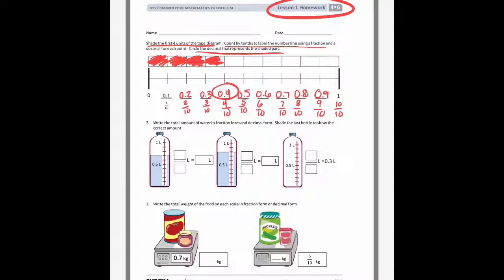Okay, number 2, it says, write the total amount of water in fraction form and decimal form. And the last one, shade the last bottle to show the correct amount. So let's look at this first bottle. If that's a liter, and I counted up from 0.5 liters, it actually is 7 tenths, which would be the same as 0.7. So I counted up from 5 to get 7.